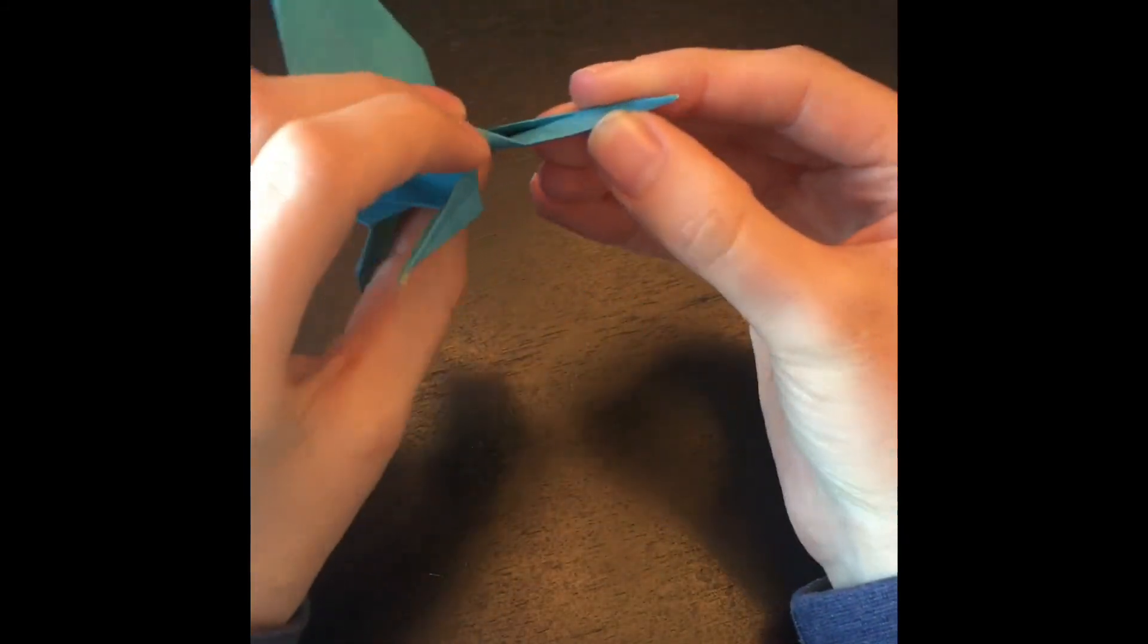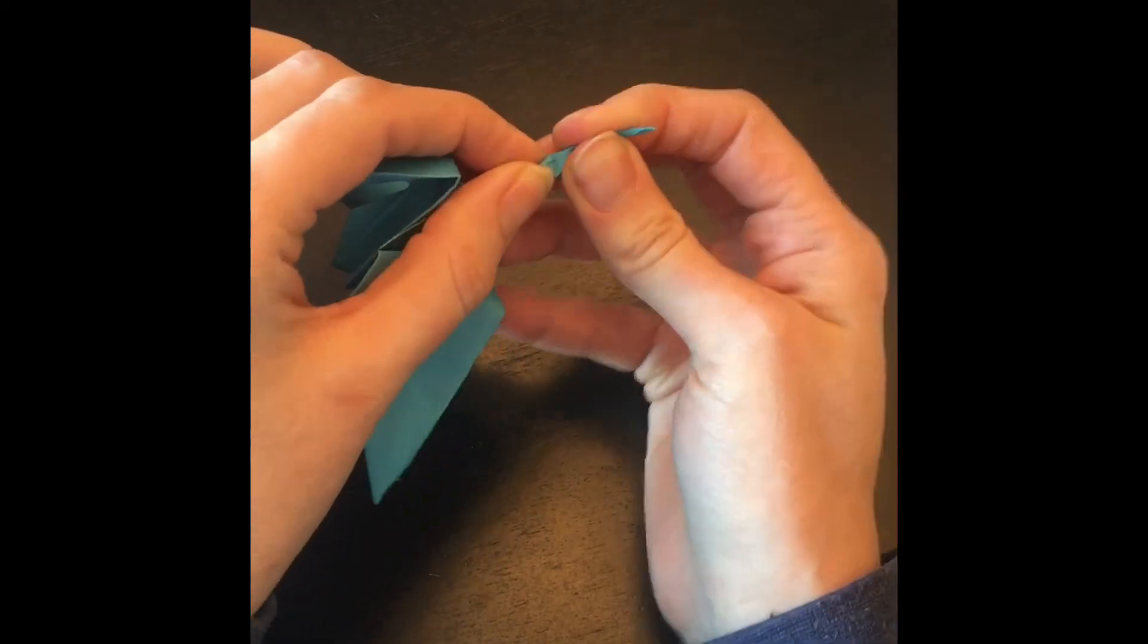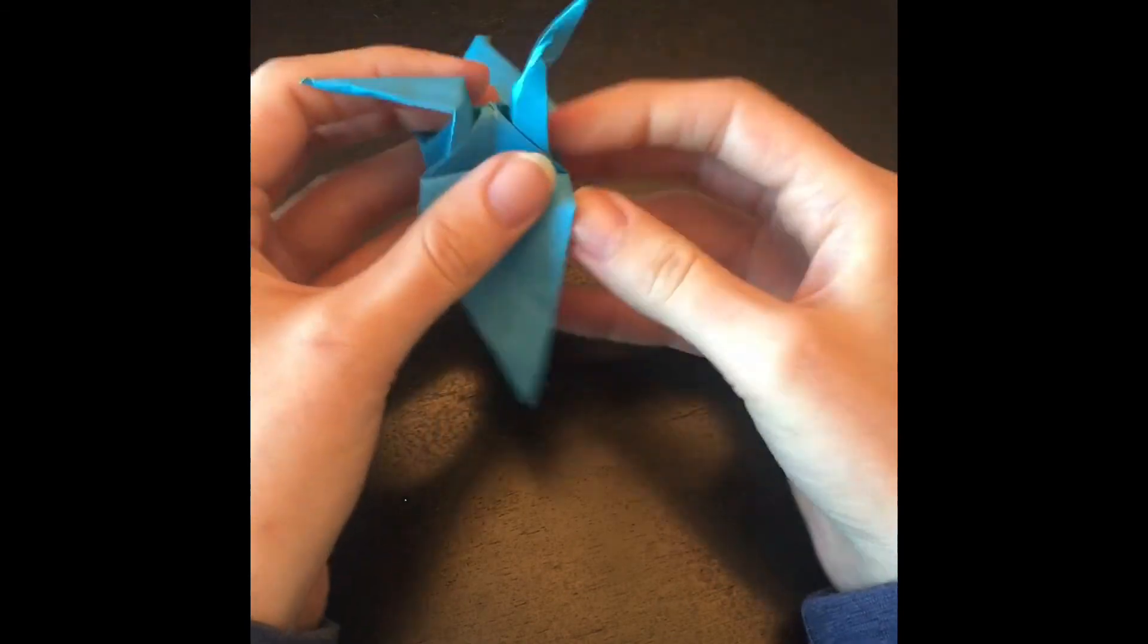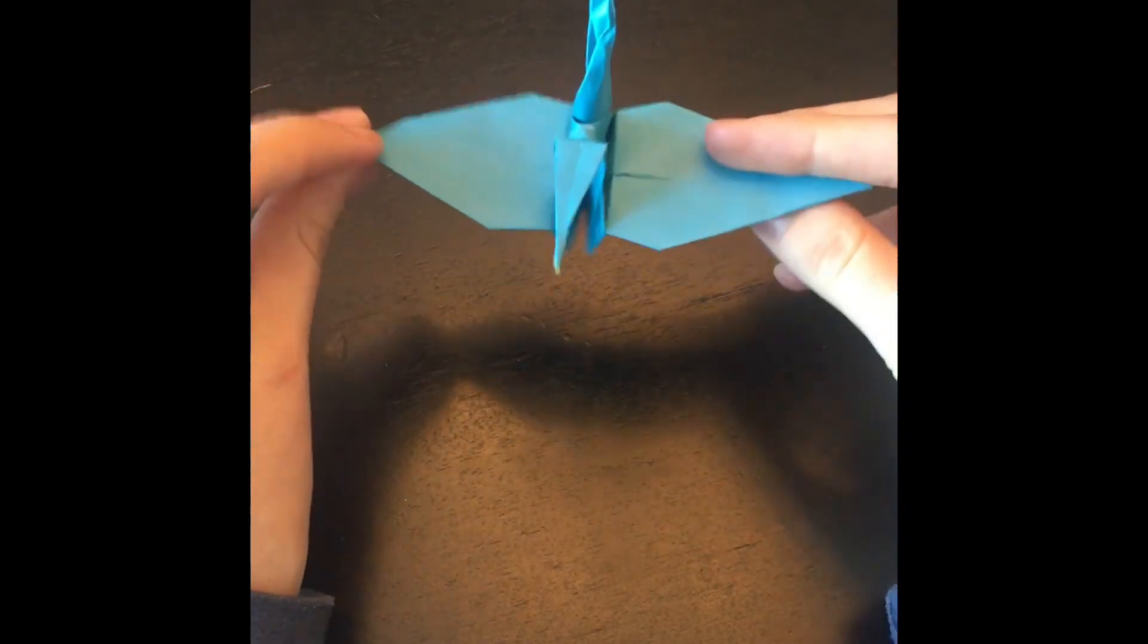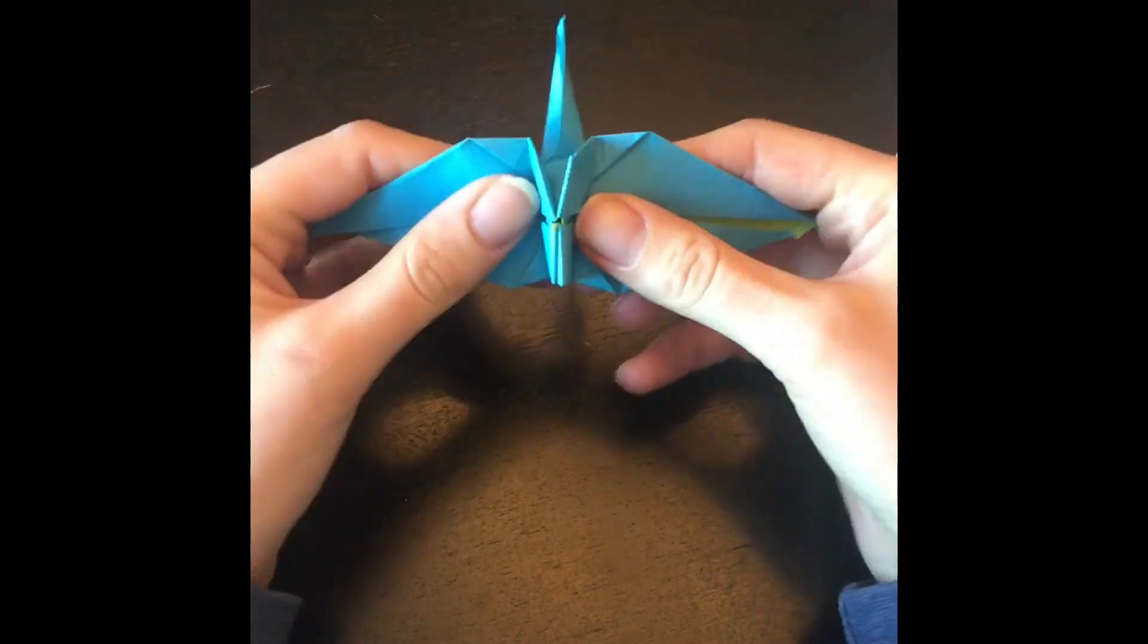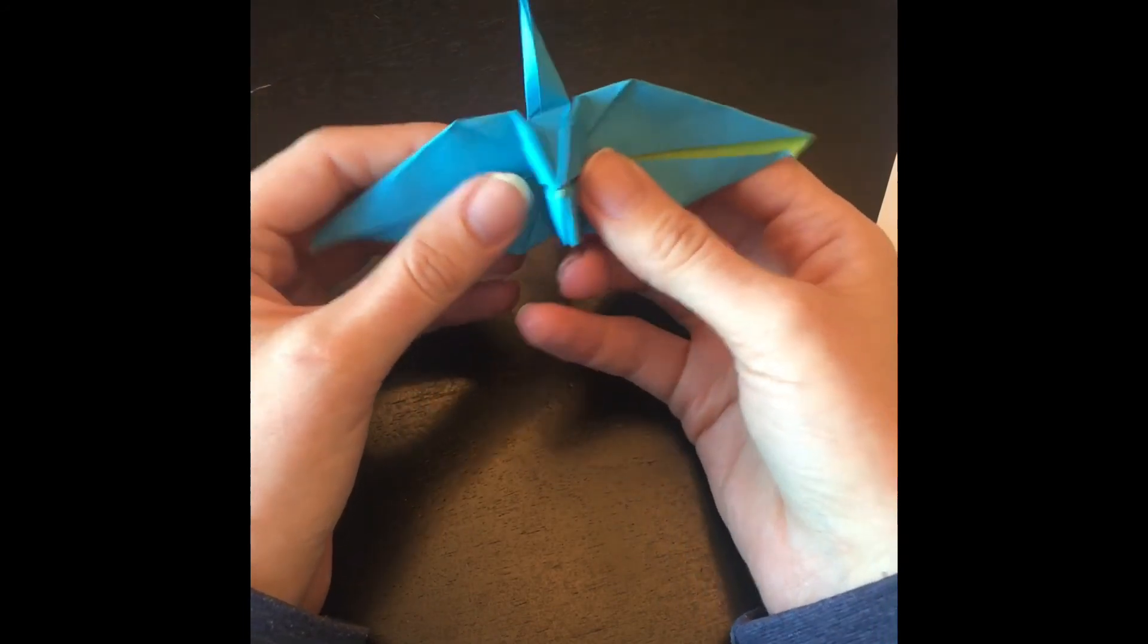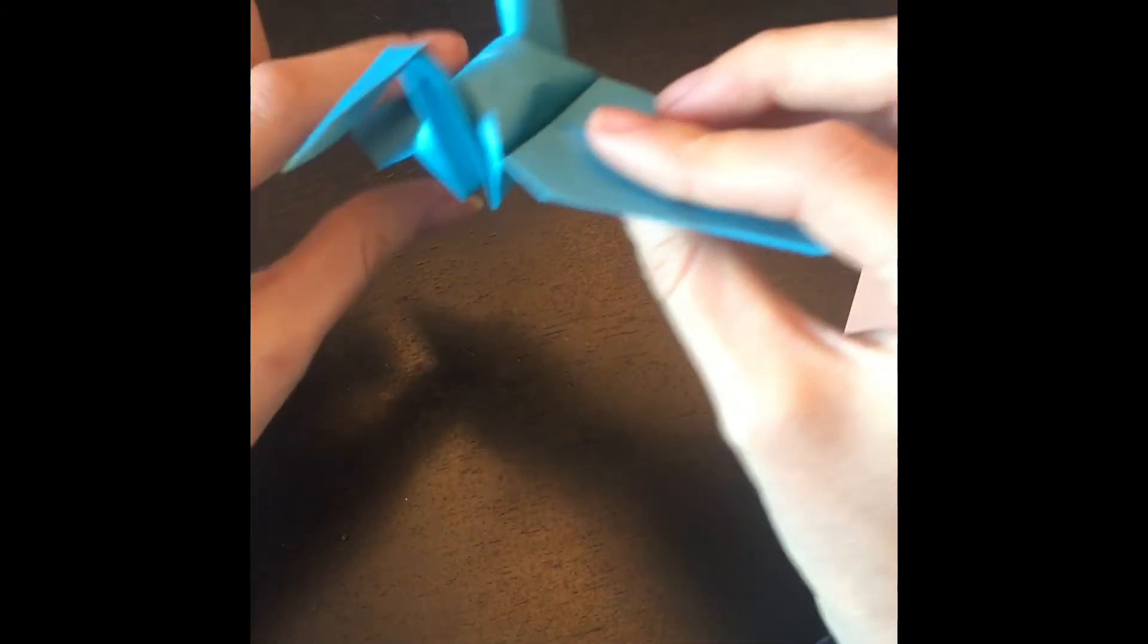Now, here is your crane. I have one more step for you. First, let's fix the tail a little bit. He looks a little sad. So, one more step for you. It does look done, but I like to puff up the body a little bit. If you look at the bottom, there's a hole in the bottom. And the best way to puff up the body is if you just blow here. And then here's the body.